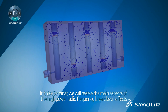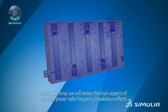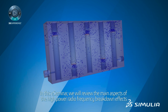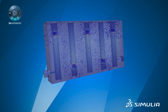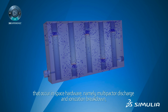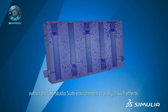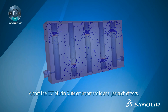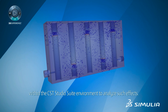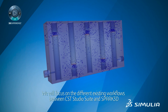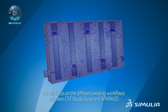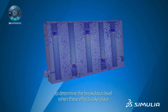In this e-seminar, we will review the main aspects of the high-power radio frequency breakdown effects that occur in space hardware, namely multipactor discharge and ionization breakdown, and review the current technology available within the CST Studio Suite environment to analyze such effects. We will focus on the different existing workflows between CST Studio Suite and Spark 3D to determine the breakdown level when these effects take place.